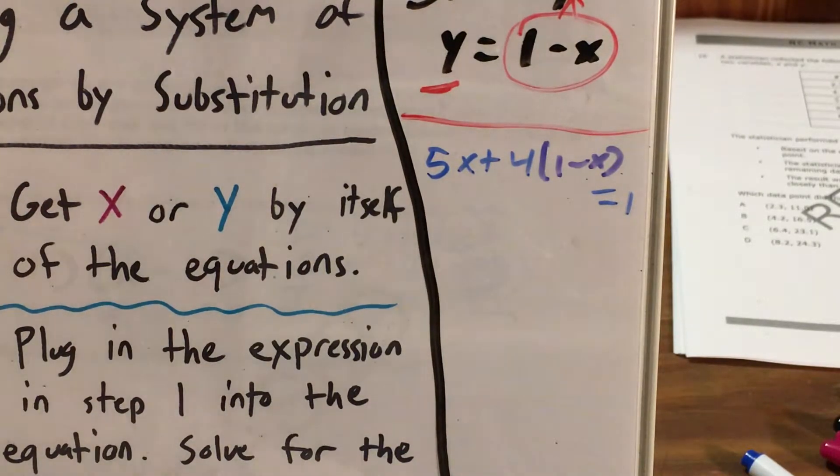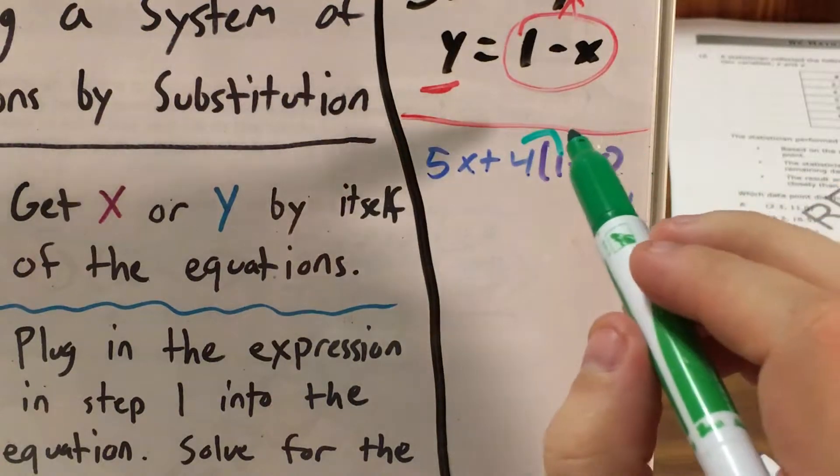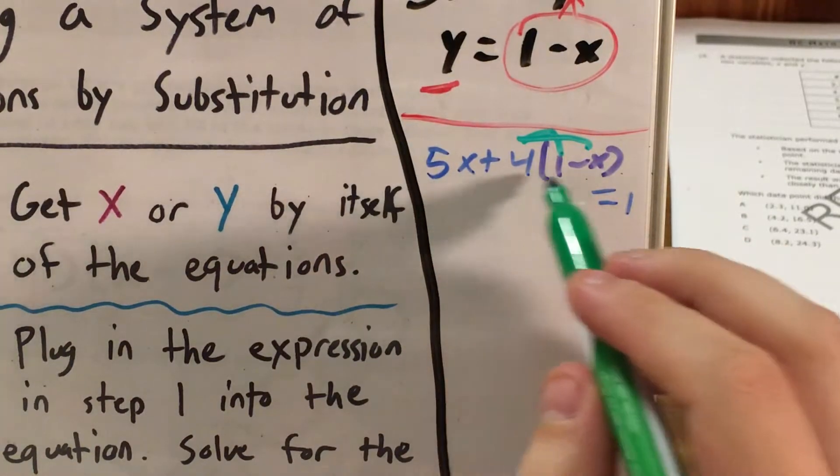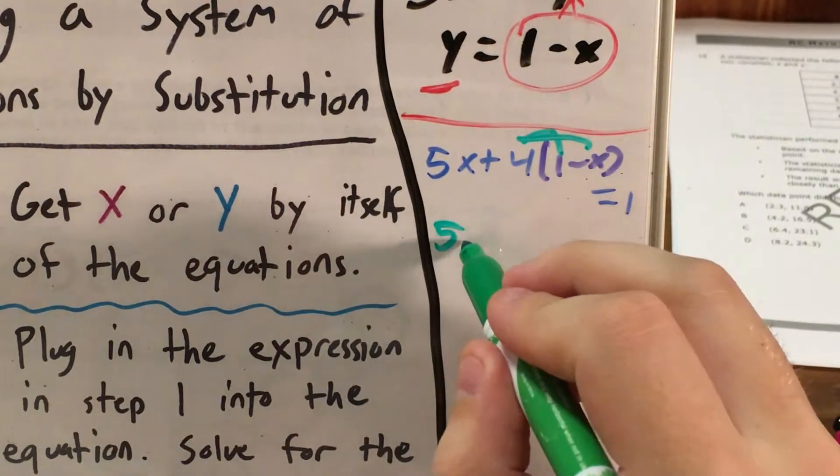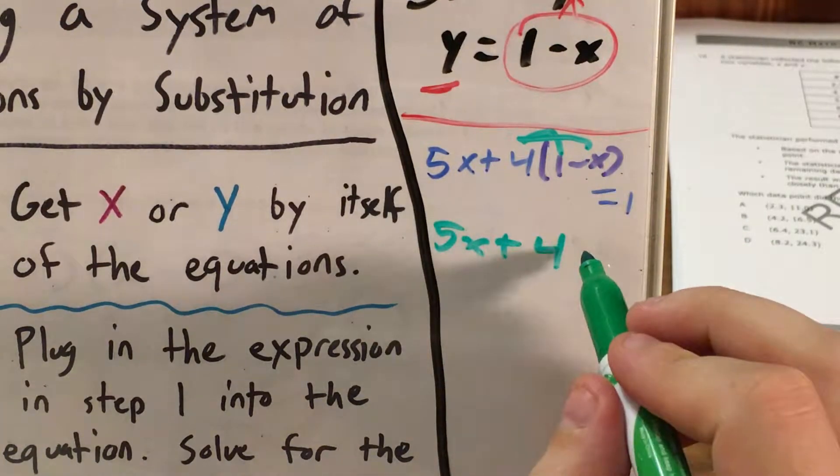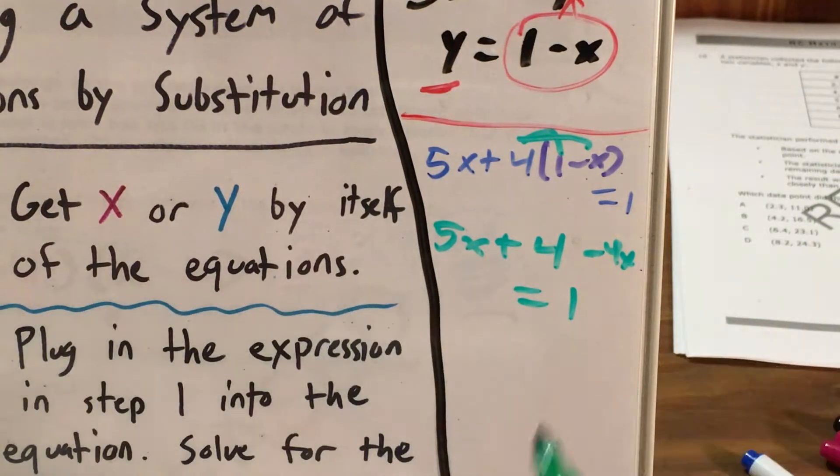All right, so I'm going to go ahead and finish up step 2. First way that I'll do that will be by using the distributive property. So I hop over here, 4 times 1. Hop over here, 4 times negative x. So this gets me now from 5x plus all this junk to 5x plus 4 times 1 is 4. 4 times negative x is negative 4x equals 1.